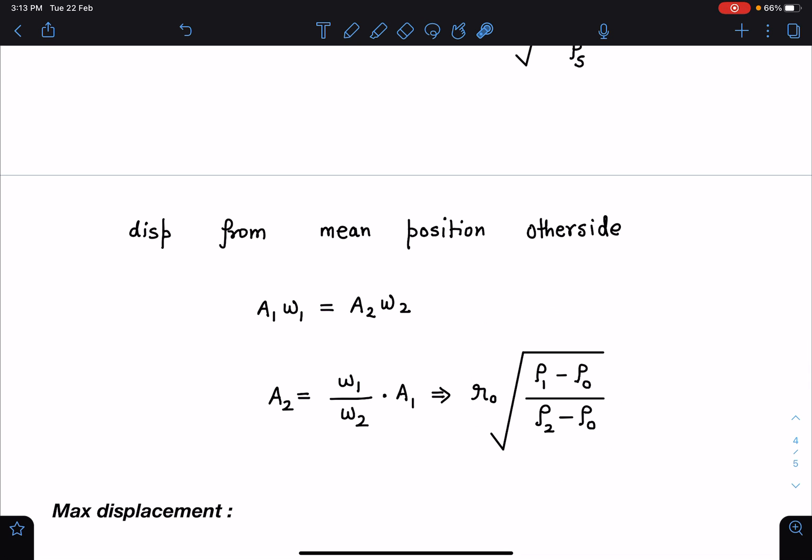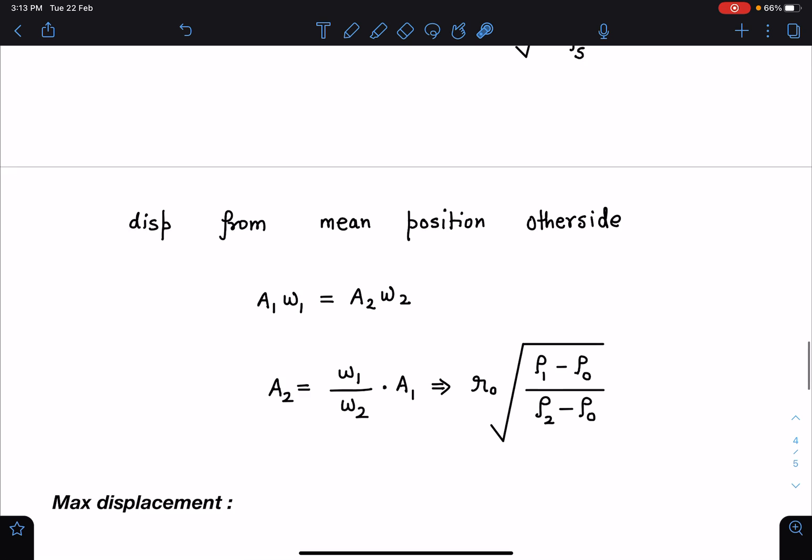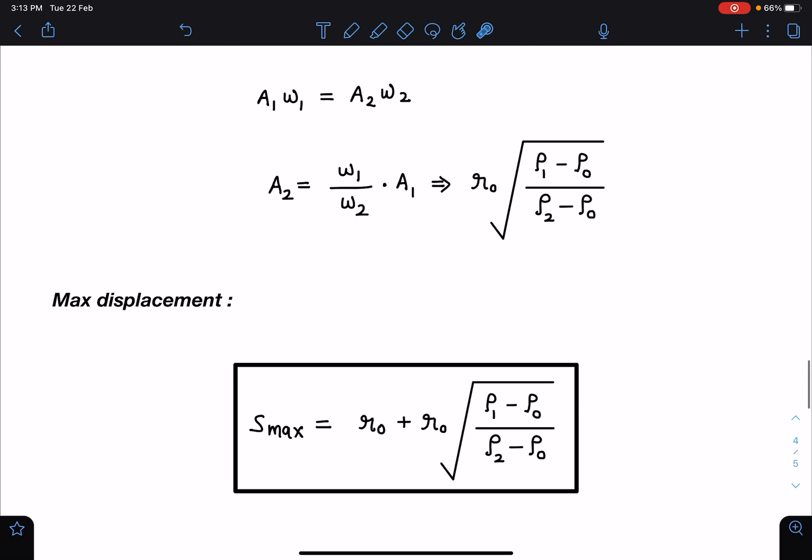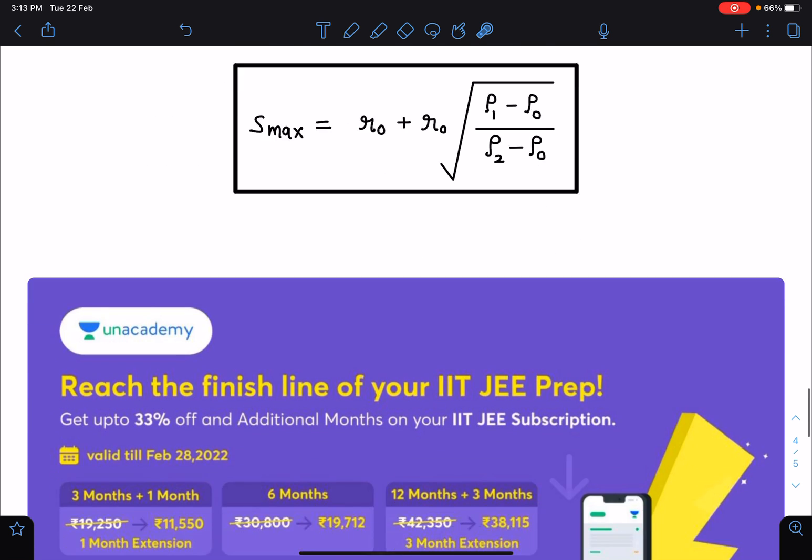Omega 1 by omega 2 ratio value, if you substitute, this will come as r naught times root of rho 1 minus rho naught by rho 2 minus rho naught. And from here maximum displacement I can write from here to here is r naught and then this a2, so r naught plus a2 or a1 plus a2 will be the maximum displacement and it will keep oscillating here. So r naught plus r naught times root of rho 1 minus rho naught by root 2 minus rho naught. We are assuming size of this ball is negligible.